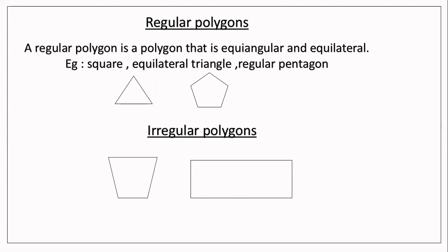Regular polygons — a regular polygon is a polygon that is equiangular and equilateral. Equiangular means all angles are equal in measure, and equilateral means all sides are equal in length. For example, a square, equilateral triangle, regular pentagon, and regular hexagon are all regular polygons. In an equilateral triangle, all sides are equal in length and all angles are equal in measure. In a regular pentagon, five sides are equal in length and five angles are equal in measure.